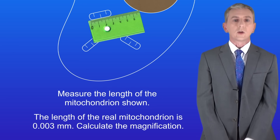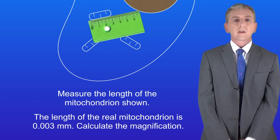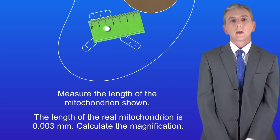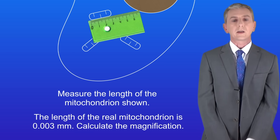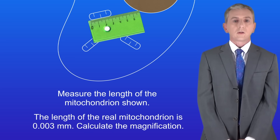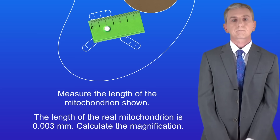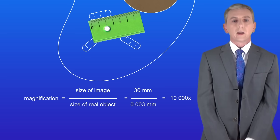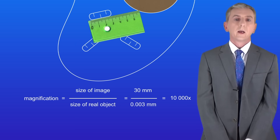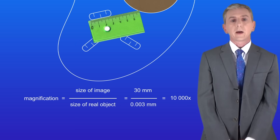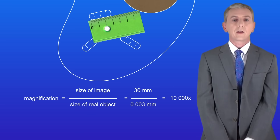Here's a question for you to try: measure the length of the mitochondrion shown. The length of the real mitochondrion is 0.003 millimeters — calculate the magnification. Pause the video now and try this yourself. From the ruler we can see that the image size is 30 millimeters. The size of the real object is 0.003 millimeters. Putting these into the equation gives us a magnification of 10,000 times.